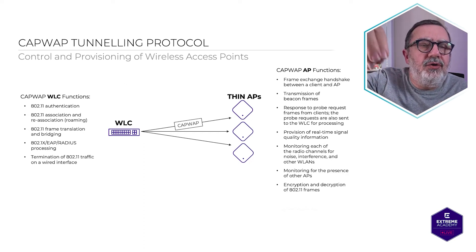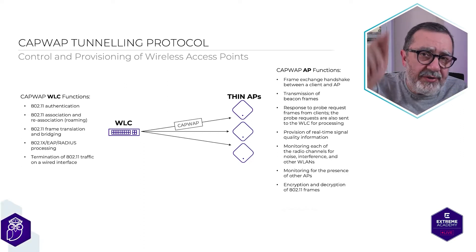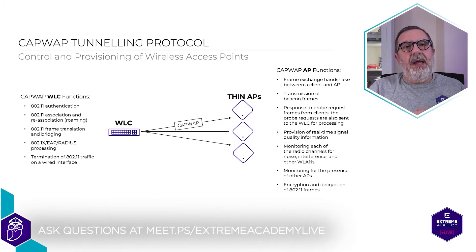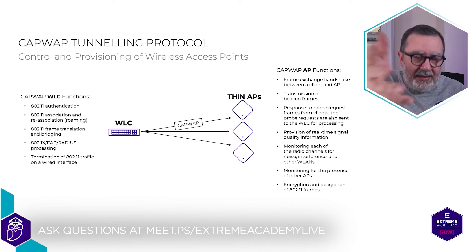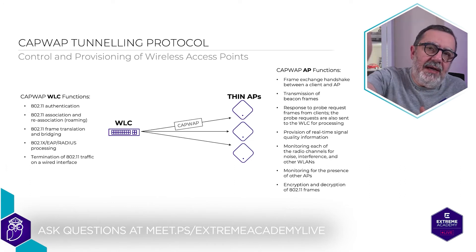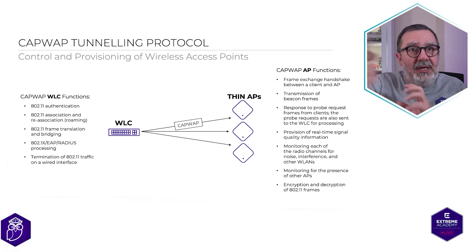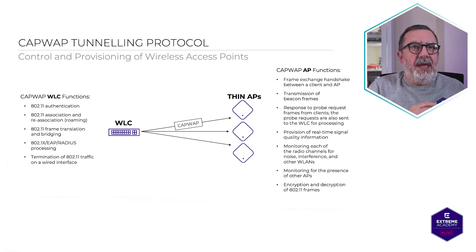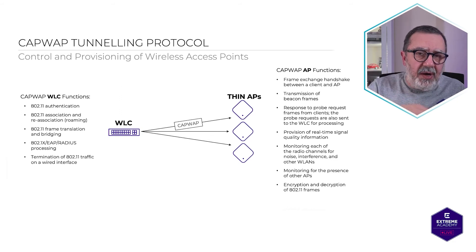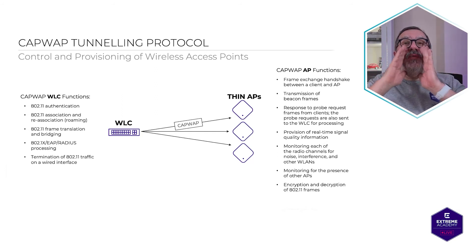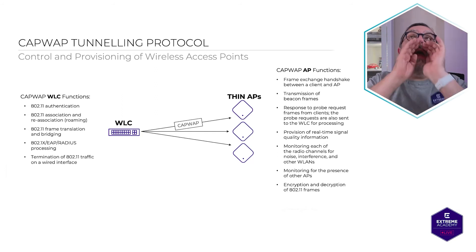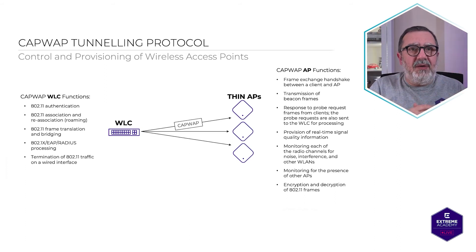So what are some of the things that CAPWAP AP functions do? For example, the frame exchange handshake between a client and an AP — when a client connects to an access point, that's going to be done with CAPWAP. The transmission of beacon frames: what are beacon frames? That's an access point saying 'Hey, I'm here and I have a wireless network called Isaac's Guest Home Network.' That's what beacon frames are.